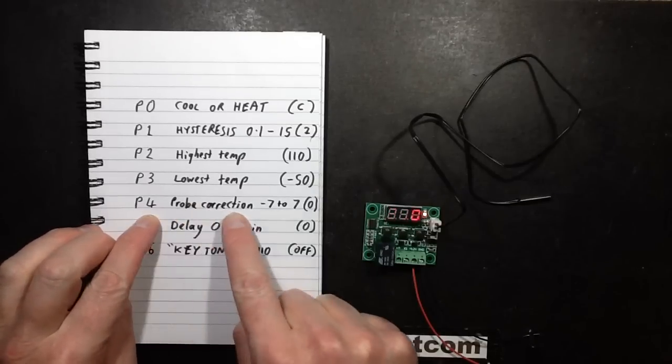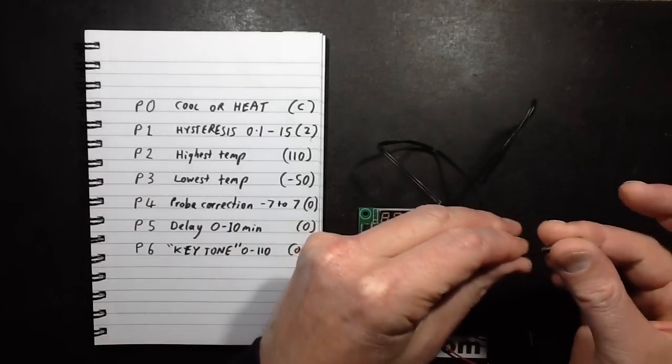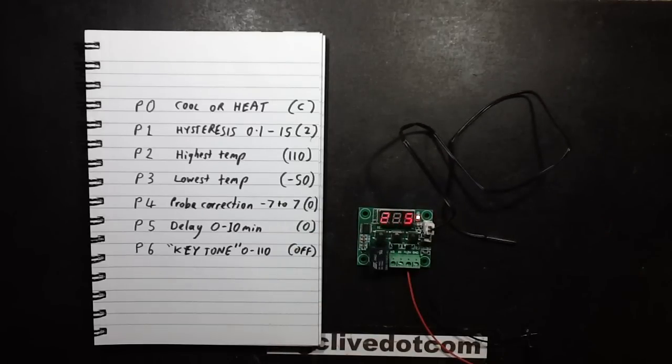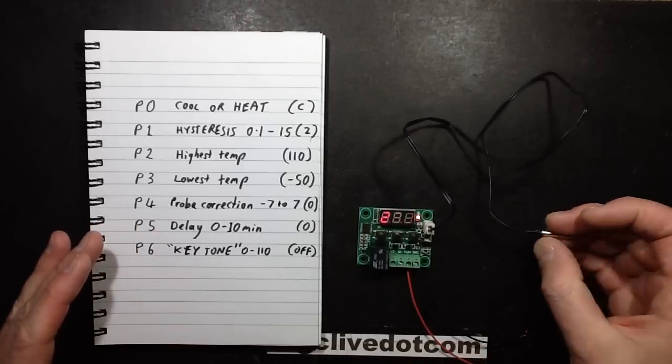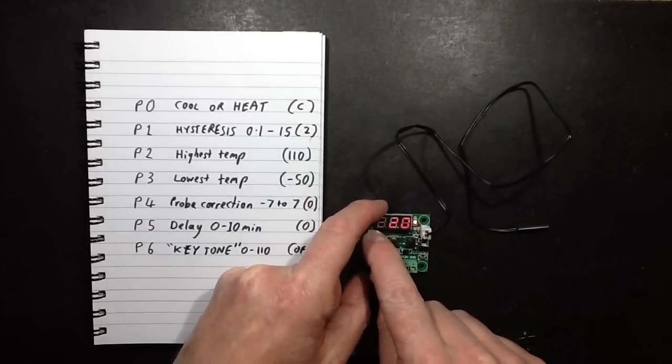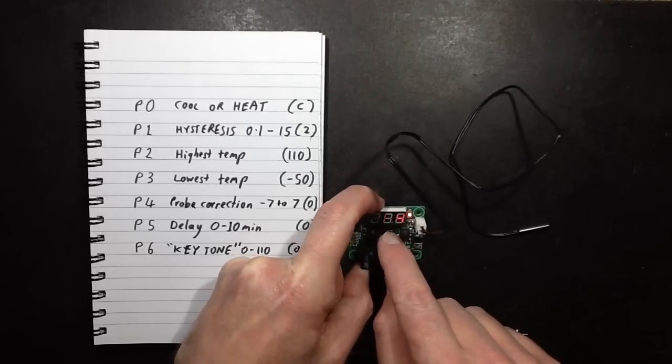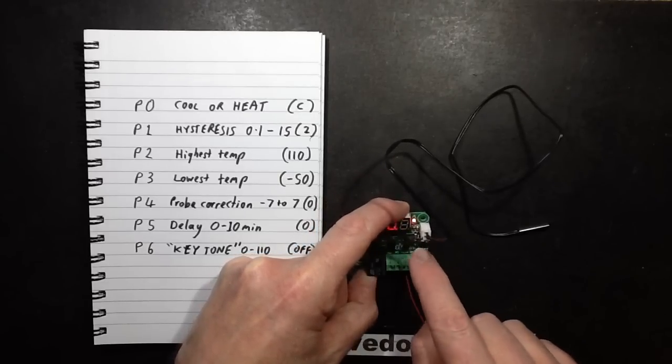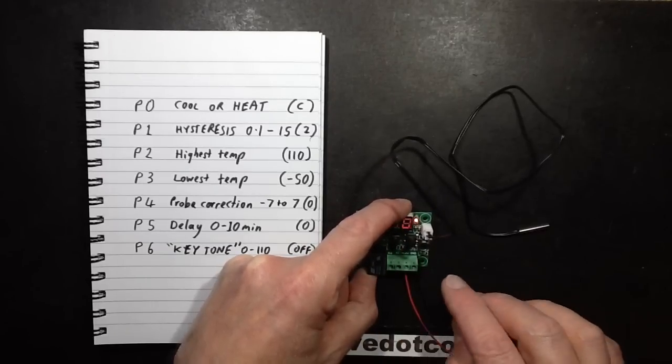P4 is really nice. It's probe correction. There's going to be some variation between the resistance and probe's tolerance. What that lets you do, it lets you calibrate the probe. And that's really quite something for something as cheap and simple as this, that you can literally calibrate it down to a resolution of a tenth of a degree. So let's go to 4, which is the probe correction. It lets you calibrate that plus or minus seven degrees in tenth of a degree steps.